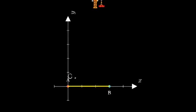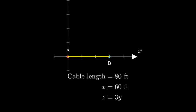We're given that the cable is 80 feet long, the X coordinate is 60 feet, and that Z equals 3Y.